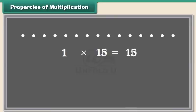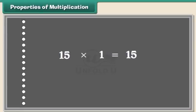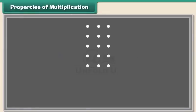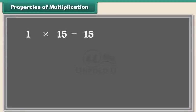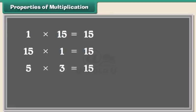Let us look at different arrangements of the 15 dots. The dots can be arranged in a single row of 15: 1 multiplied by 15 is equal to 15. In 15 rows of 1 dot each: 15 multiplied by 1 is equal to 15. In 5 rows of 3 dots each: 5 multiplied by 3 is equal to 15. And 3 multiplied by 5 is equal to 15. These are called multiplication facts.